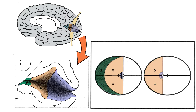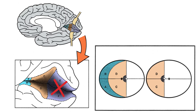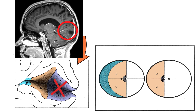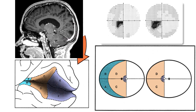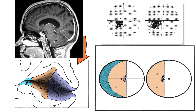The peripheral temporal field, extending from 60 to 90 degrees, is represented in the most anterior portion of primary visual cortex. When a lesion is restricted to the posterior half of primary visual cortex, the homonymous visual field defects are limited to the central 5 to 10 degrees. Such defects are called homonymous paracentral scotomas, and because they have a border aligned to the vertical meridian, they are called macular splitting defects.